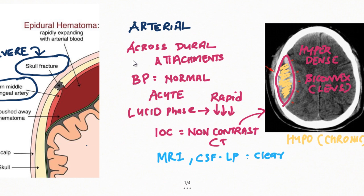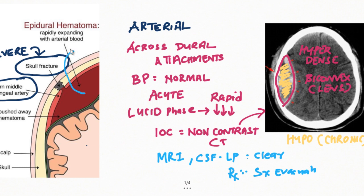This is a medical emergency because it is a rapidly expanding hematoma. Treatment is emergency surgical evacuation — the hematoma is surgically removed and then the tear in the artery is repaired by cauterization or ligation of the blood vessel.